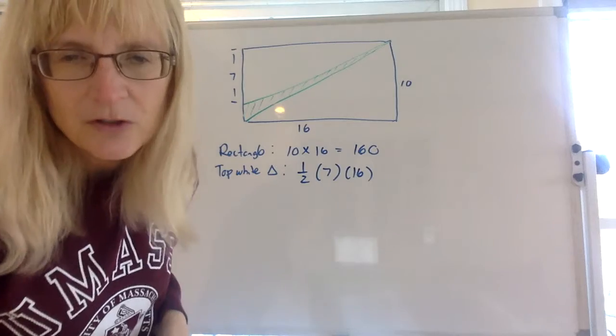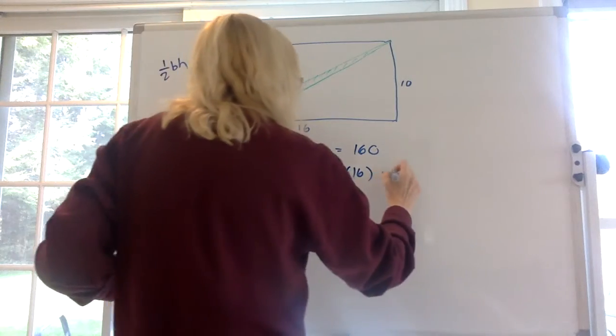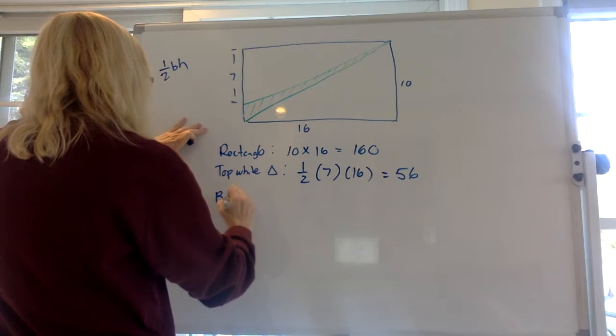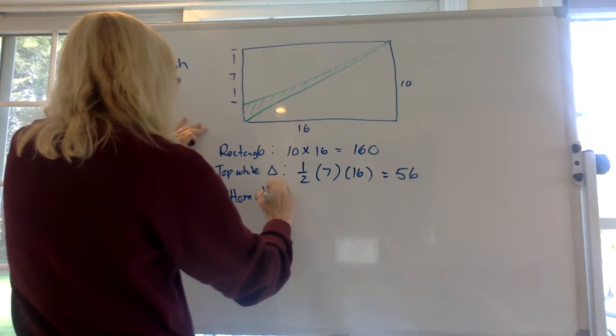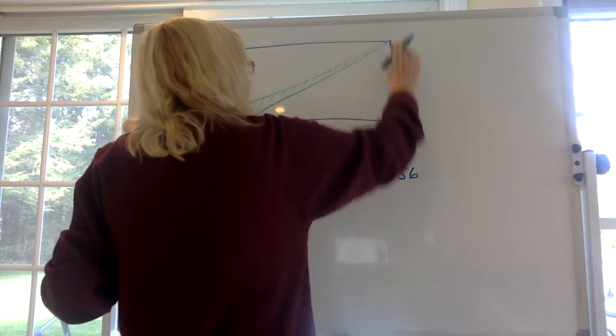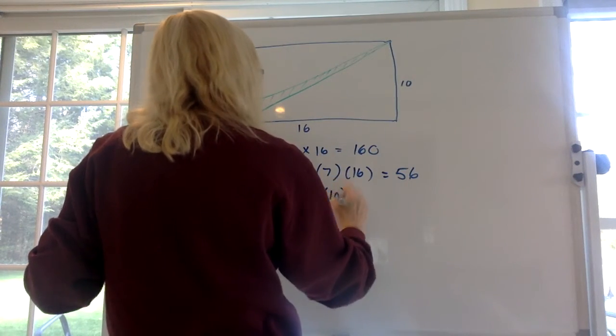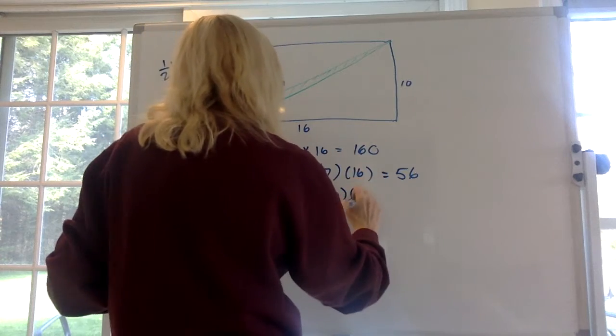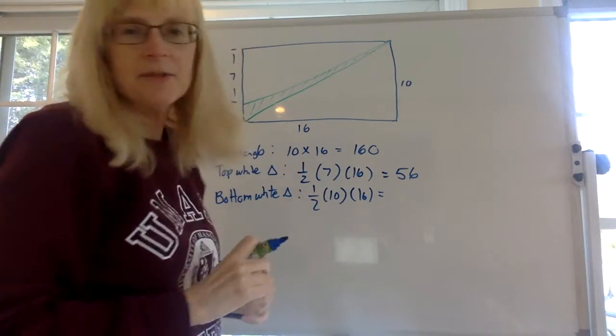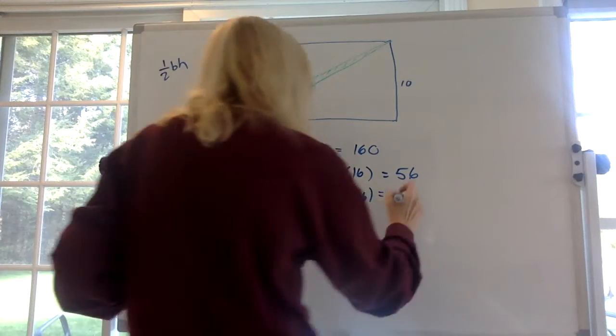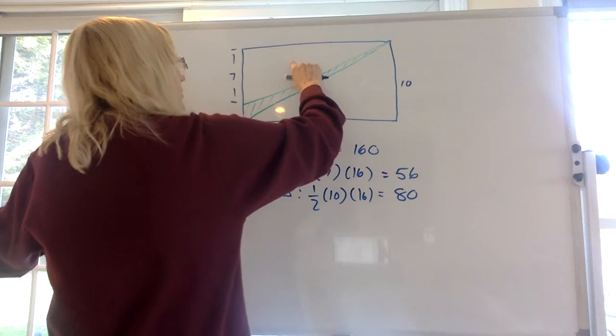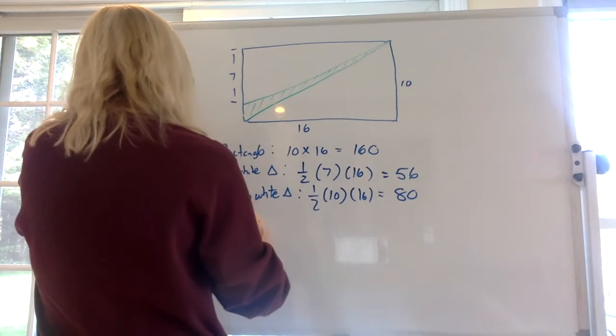So I think it comes to 56 for the top and 80 for the bottom. So we know the whole area, we know this white triangle, we know that white triangle. We can just subtract, right?